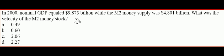Okay, in 2000, if nominal GDP equaled $9,873 billion, while the M2 money supply was $4,801 billion, what was the velocity of the M2 money stock?